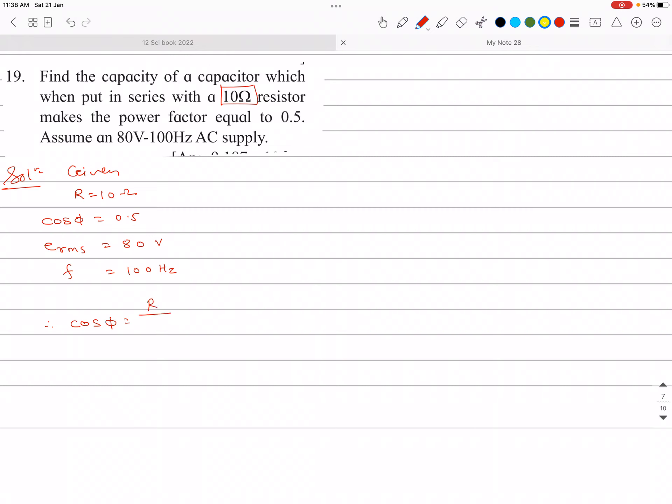So in this circuit this resistor and capacitor is there. So this Z is given by formula under root R square plus XC square.